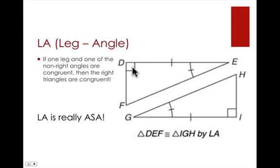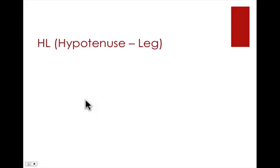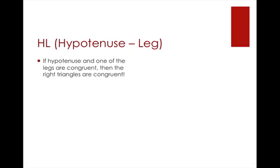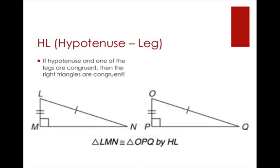LA is really just ASA, because the right angle counts as one of the congruent pairs of angles — all right angles are congruent — so we have angle, side, angle. Next is hypotenuse-leg, or HL. HL means you have the hypotenuse and one of the legs congruent, and from that you can say the triangles are congruent. For example, hypotenuse LN is congruent to hypotenuse OQ, and leg LM is congruent to leg OP, so we have hypotenuse-leg matching.